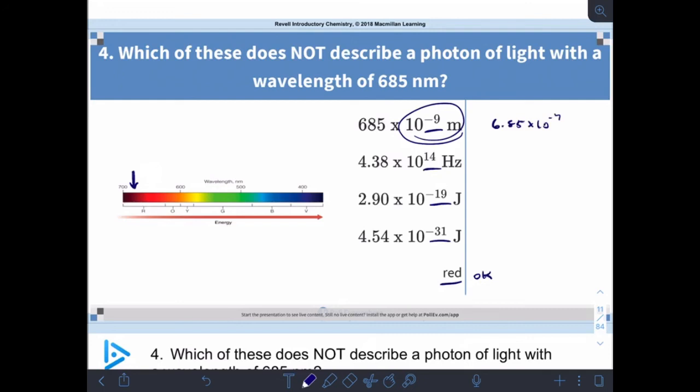But this minus 31 joules—that's pretty far out. So I'm going to go with this answer as not describing the wavelength of light.